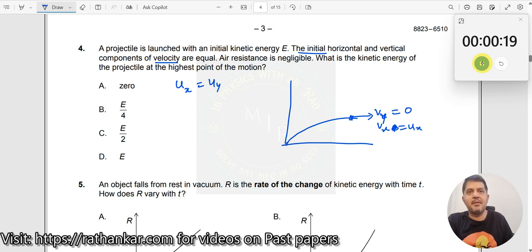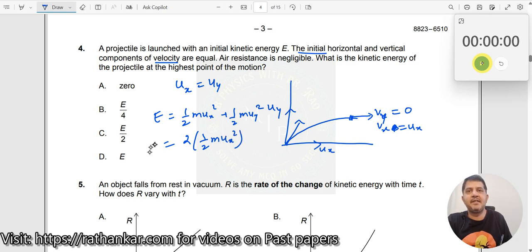Now what is the energy, what is the velocity here? The velocity here is - this is your uy, this is your ux. What is the total energy here? Total energy e should be equal to ½mux² plus ½muy². But it is already said ux equals uy, so this should be 2 times ½mux² equals e.